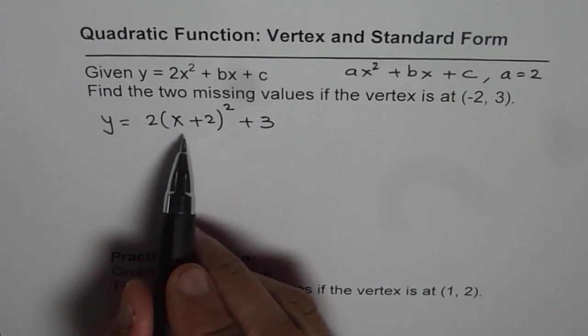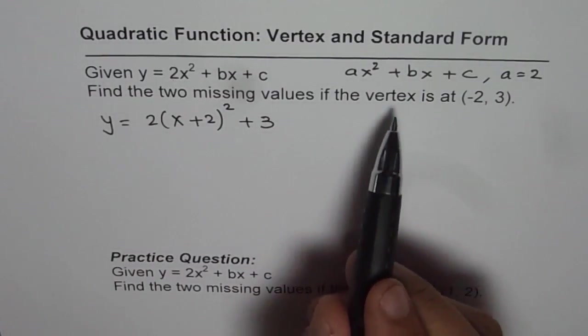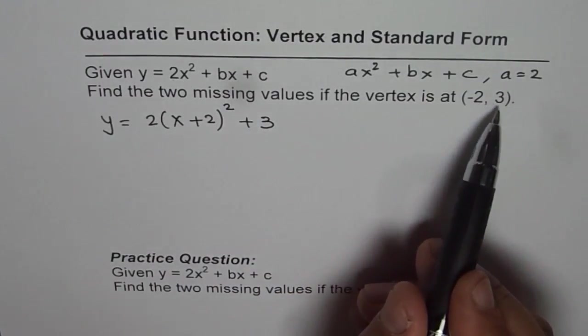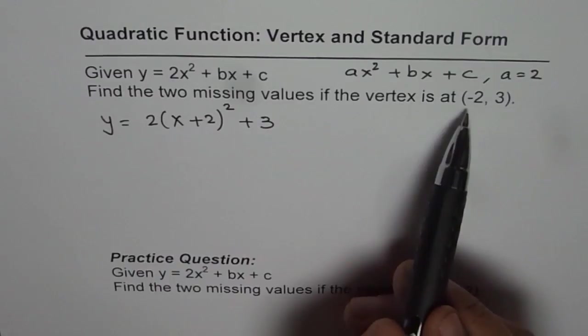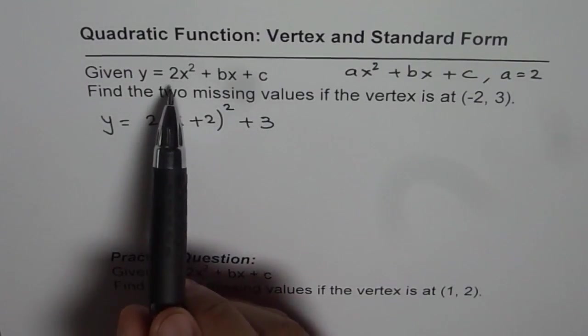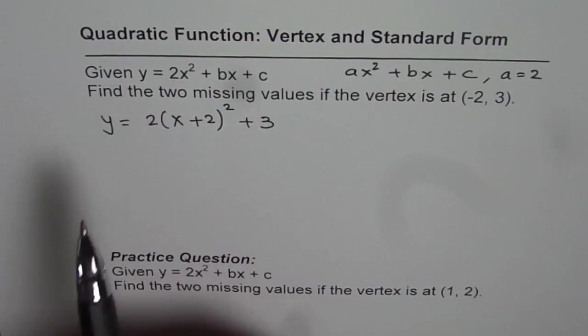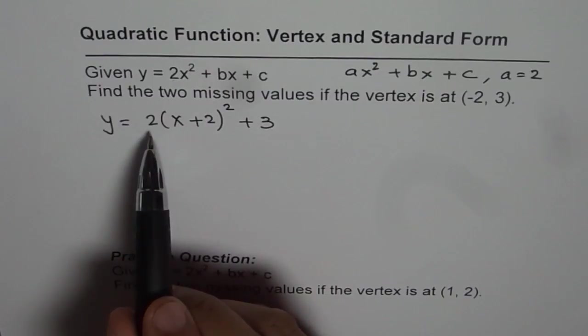So that is the quadratic equation with vertex of (-2, 3). Since we are comparing this equation with the given equation, leading coefficient is 2 and therefore I have taken a as 2.